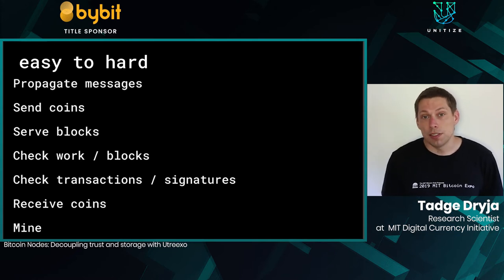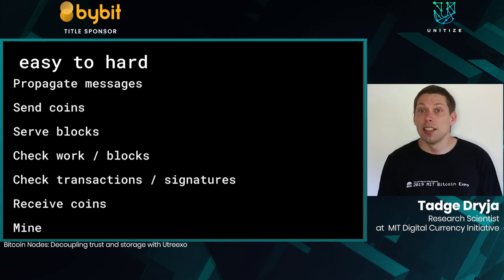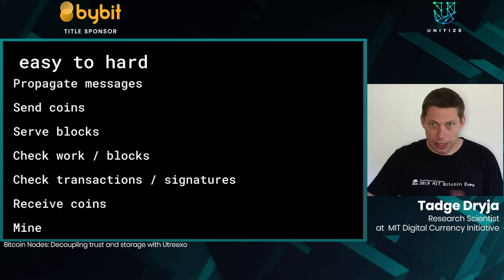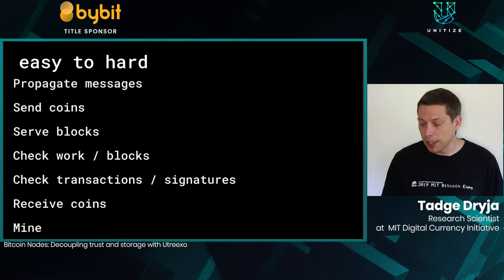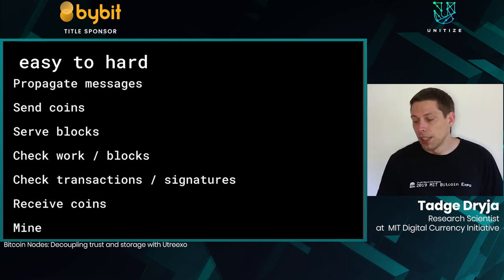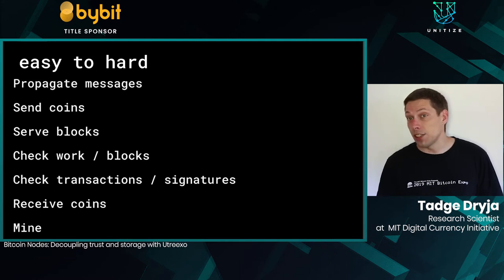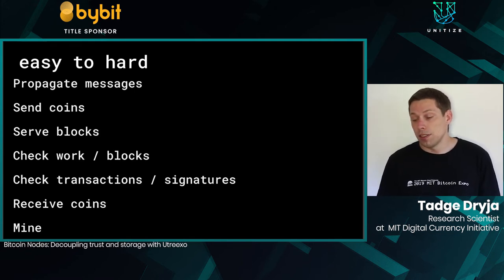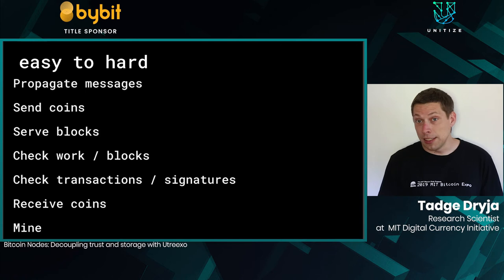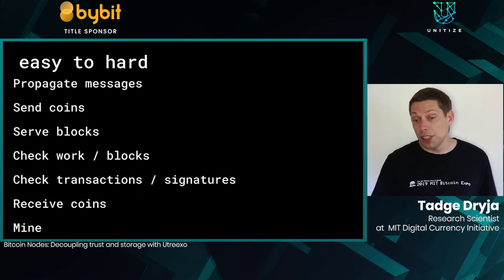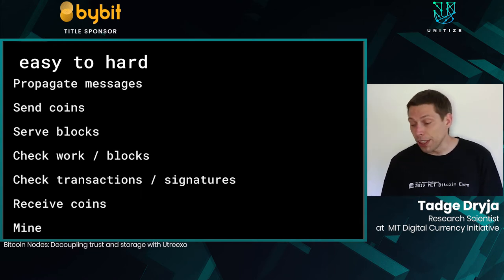I sorted these functions from easiest to hardest. Propagating messages is easy — you don't need much memory, storage, or signature knowledge; you just pass messages along. Sending coins is easy too: signing is very quick and you don't need to know much about the system. Serving blocks is also easy — when people request a block by hash, you can send it out with no idea what it means, like being a web server.